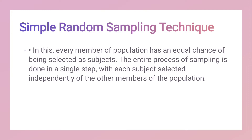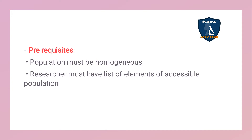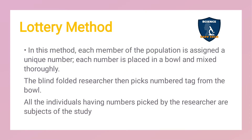The first sampling technique is simple random sampling. In this, every member of the population has an equal chance of being selected as a subject. The entire process of sampling is done in a single step procedure — that is why it is called simple random sampling. Each subject is selected independently of the other members of the population. There are some prerequisites: the sample should be homogeneous.